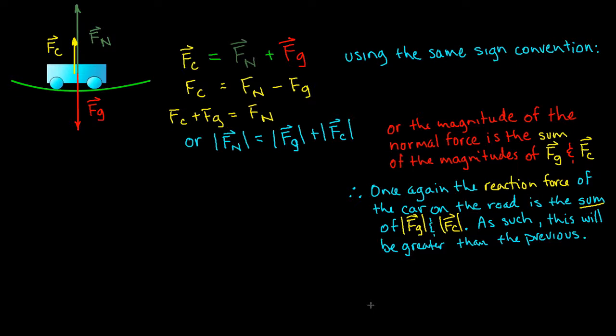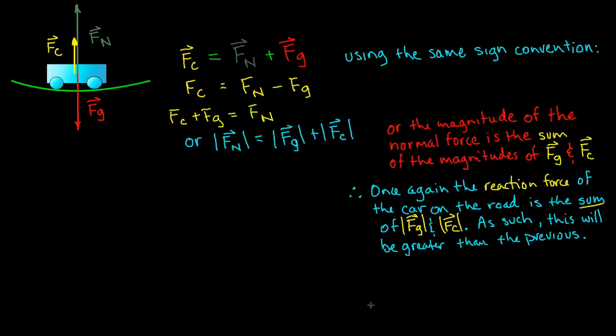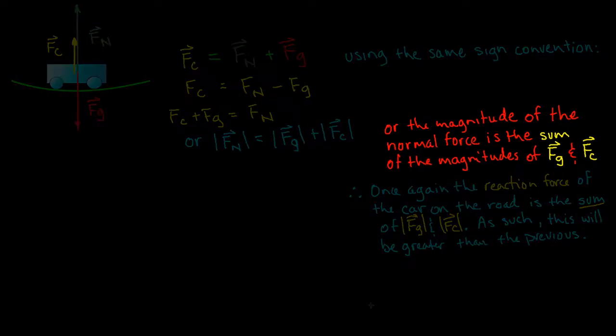So I've written that vector Fc equals vector Fn plus vector Fg. Using that same sign convention I have that Fc is equal to Fn minus Fg. That's because Fc and Fn are both pointed up, they're both positive, and with Fg pointed down that's negative. So now we have when we rearrange that equation Fn is equivalent to Fc plus Fg or Fc plus Fg is equal to Fn. And if I throw my vectors back in which is the way I like to write it, I would write that the magnitude of vector Fn is equal to the magnitude of vector Fg plus the magnitude of vector Fc.